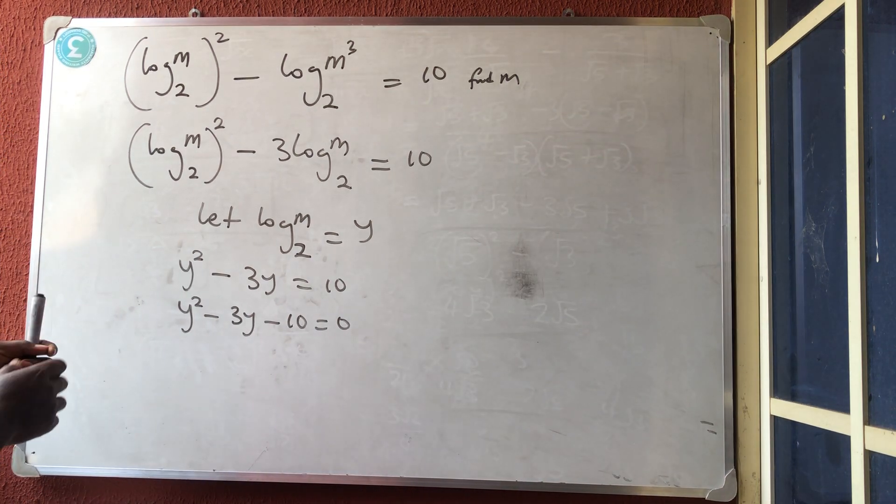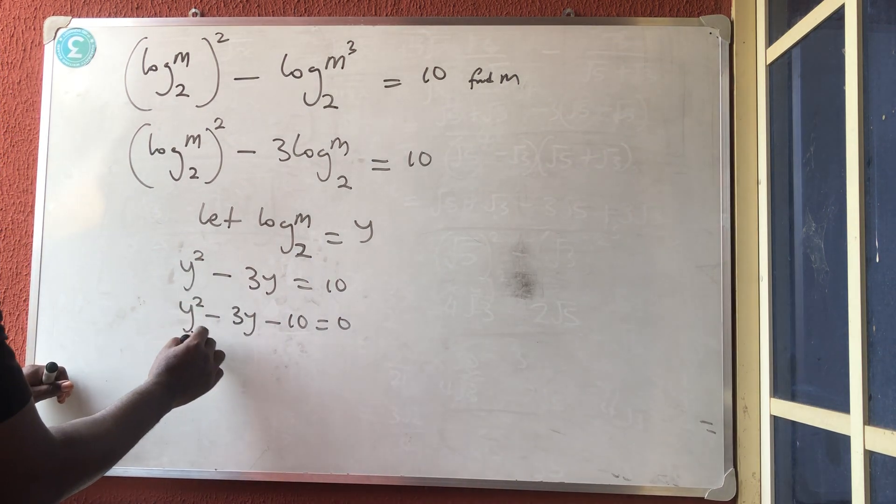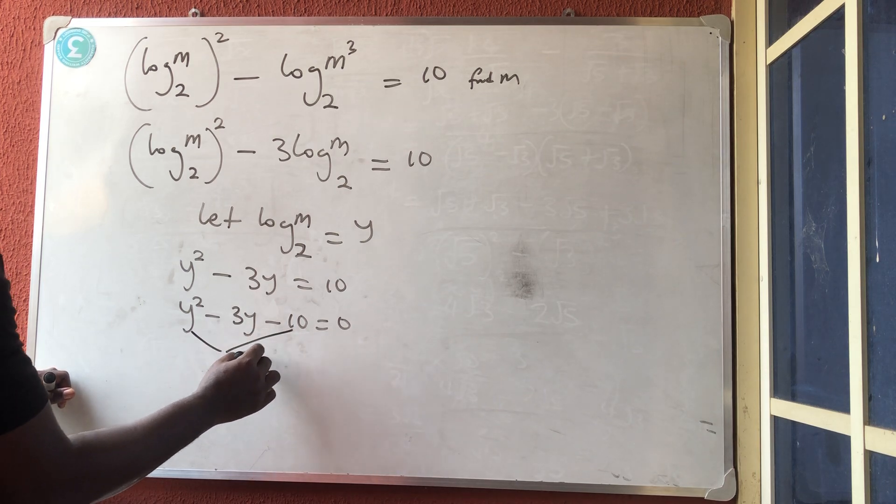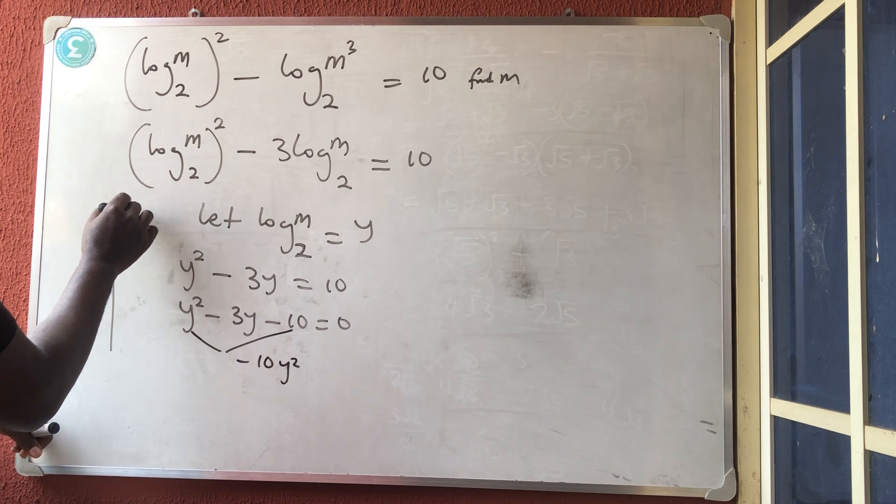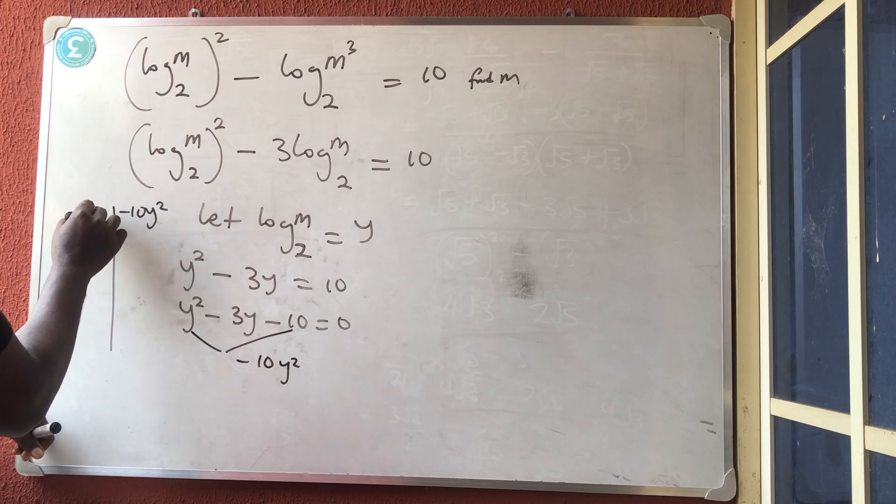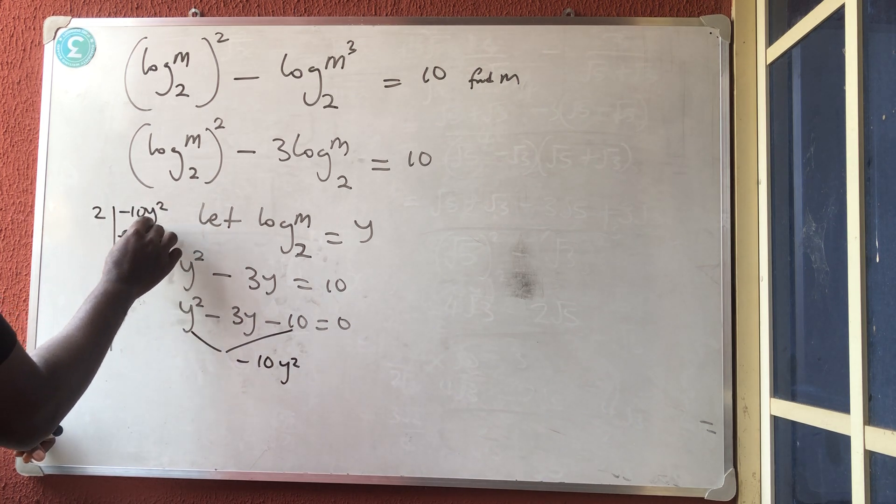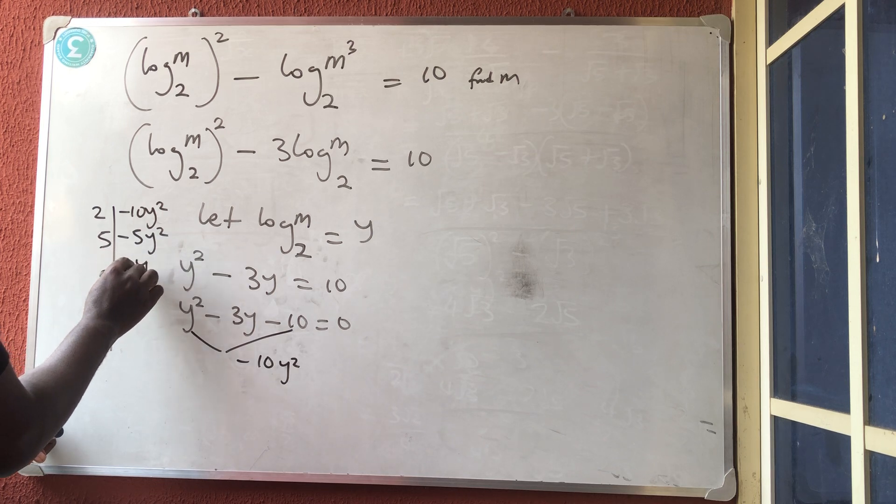Now, this is factorization method of quadratic equation. So this times this to have minus 10y squared. So let's find out. Minus 10y squared, 2 divide, minus 5y squared, 5 divide, minus y squared, y divide, minus y, minus y, 1. So the two groups should be 2 and y and 5 and minus y.